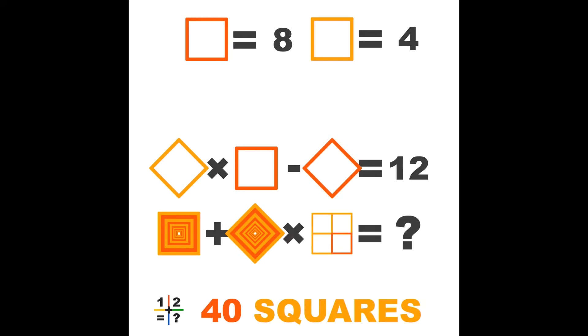So let's do line 3. Yellow times orange minus orange equals 12. 4 times 8 minus 8 equals 12. That can't be right. So when a square turns, the value changes. Let's see if we can find out.